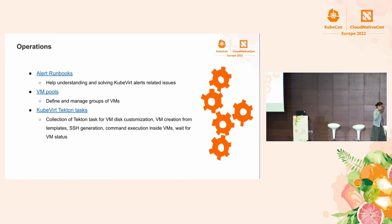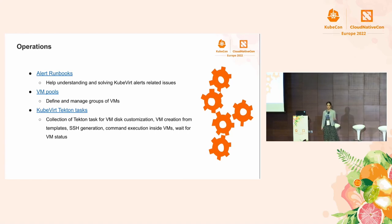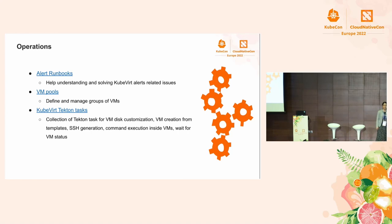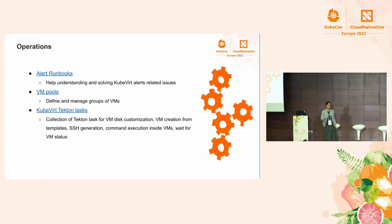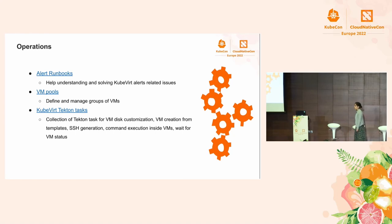We want to integrate with many projects and be part of the Kubernetes ecosystem. In the KubeVirt organization you can find a collection of Prometheus alerting rules and Grafana dashboards in the monitoring repository, which can help you understand KubeVirt alerting issues. Since Kubernetes is all about scale, we want to be able to create and manage groups of VMs easily — that's exactly the goal of the VM pool, which lets you define and manage a group of VMs based on a template.